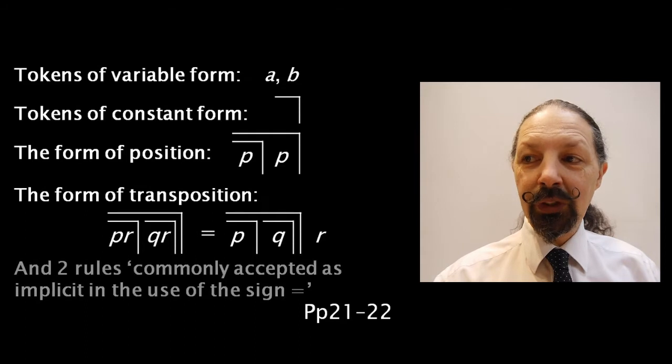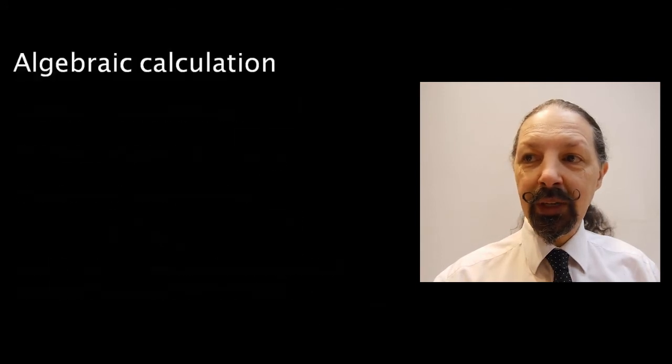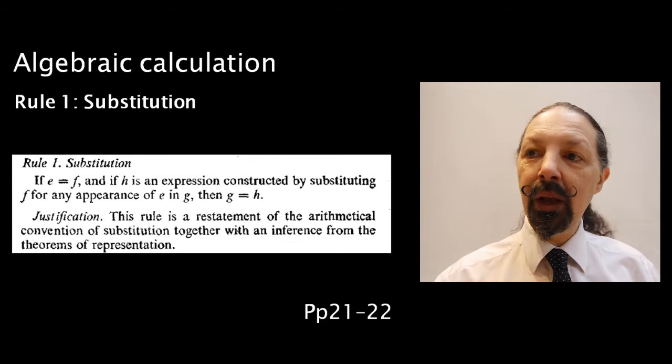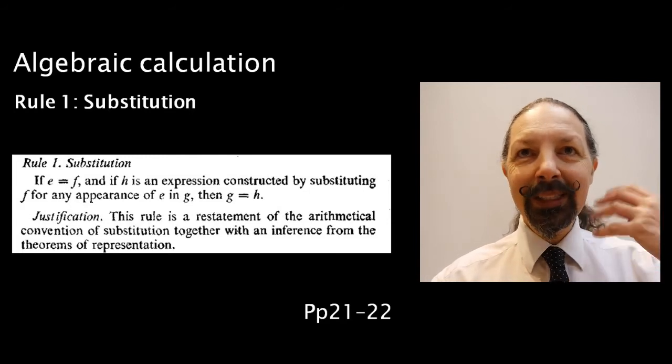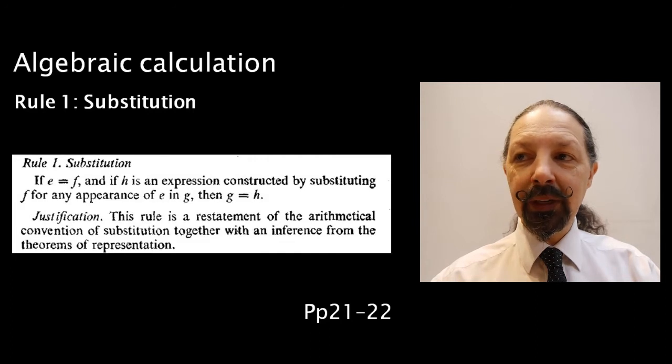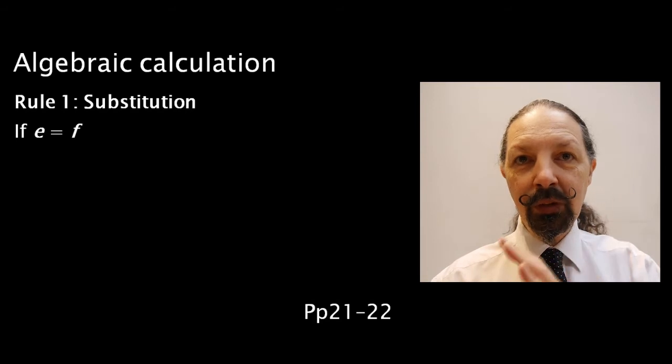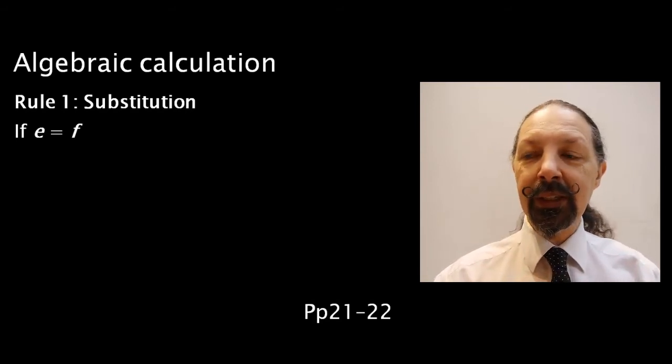And two rules commonly accepted as implicit in the use of the sign equals. Now, these we're going to go into in quite a lot of detail in this session. Rule one is about substitution. His wording of it is quite syntactically complex, so I prefer to state it like this, and I will compare my version with his so that you know that we're talking about the same thing.